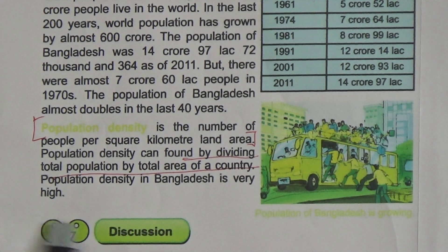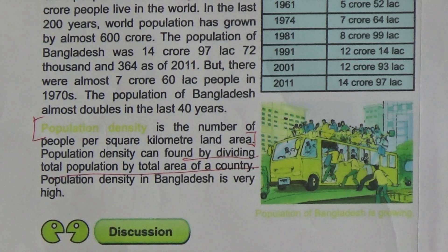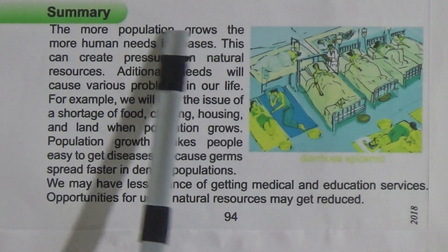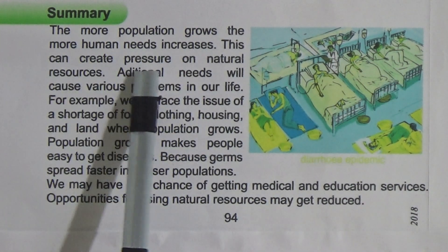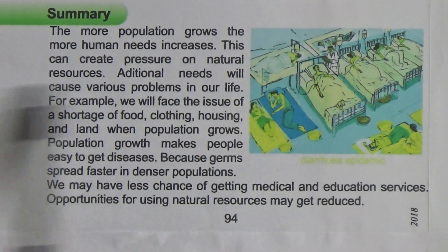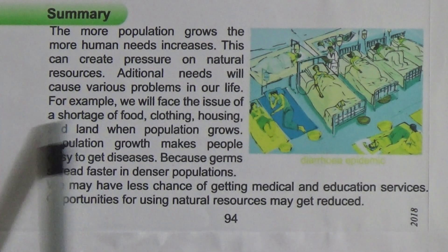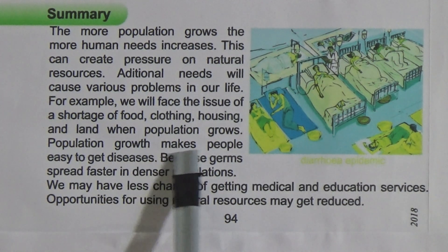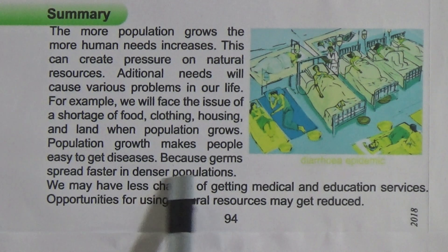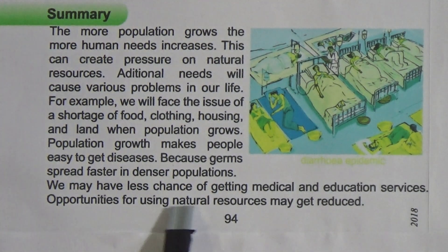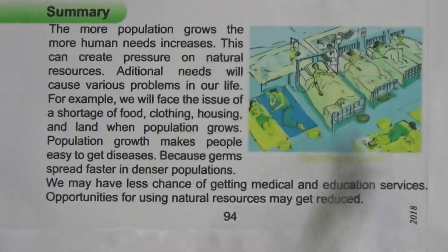Now we come to population growth and human needs. The question arises: what will happen to our life if population increases? The answer is: the more population grows, the more human needs increase. This creates pressure on natural resources. Additional needs will cause various problems in our life. For example, we will face shortages of food, clothing, housing, and land. Population growth also makes it easier for diseases to spread because germs spread faster in denser populations. We may also have less chance of getting medical and educational services.